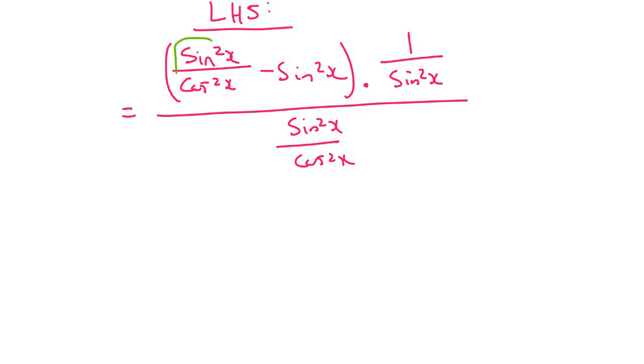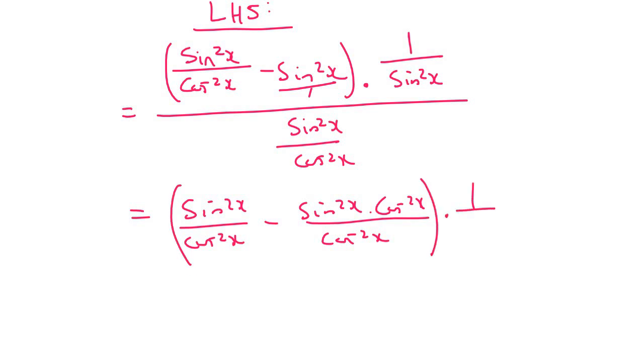What we can do now is realize that inside here there's a fraction, so we need a common denominator because this is technically over 1. That's going to become sin²x over cos²x minus sin²x times cos²x over cos²x. Then this times by 1 over sin²x is still there, and at the bottom we have sin²x over cos²x.